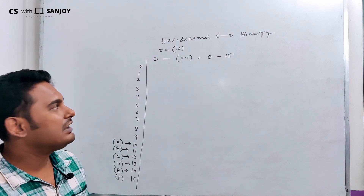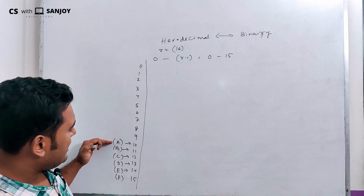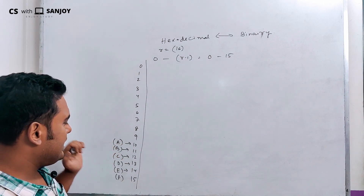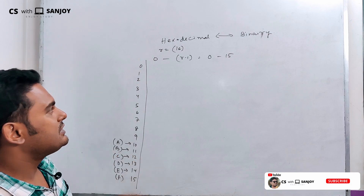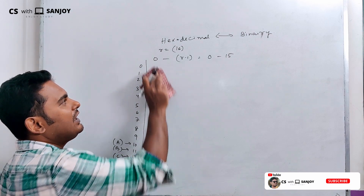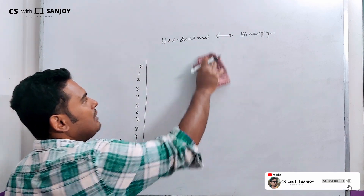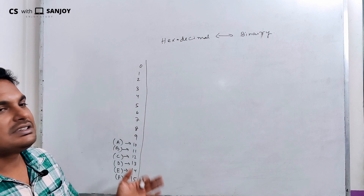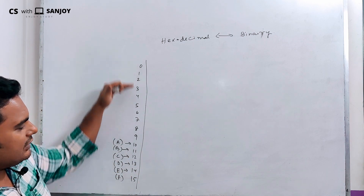That is: A equals 10, B equals 11, C equals 12, and so on. Now that we know the binary number system, we can see there is a single symbol used there.